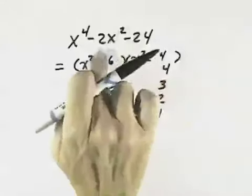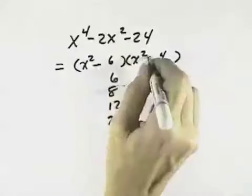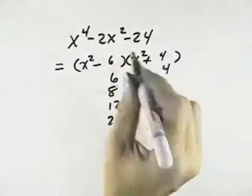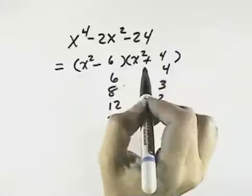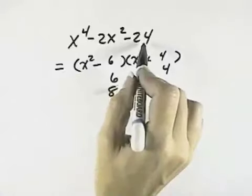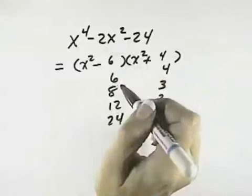Since we want the negative 2x squared, that just means we switch these signs, make the first one negative, the second one positive. So we have x squared minus 6 times x squared plus 4. That will give us the negative 2x squared in the middle, as well as the negative 24 in the last term and the x to the 4th in the first term.